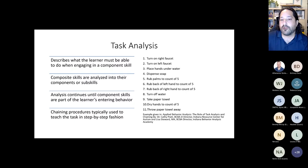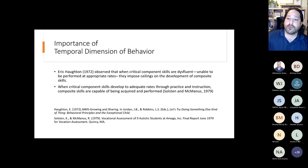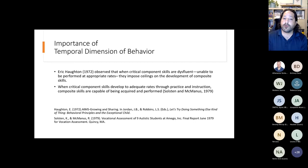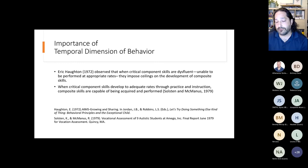Solstein and McManus later found that when critical component skills develop to adequate rates through practice and instruction, the composite skills are capable of being acquired and performed. Solstein and McManus worked a lot in vocational settings, looking at tool skills for adults and older learners, while Eric Cotton was looking at tool skills for learners in a school setting.